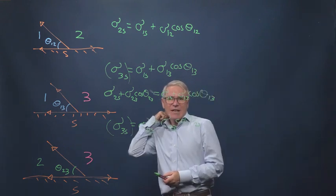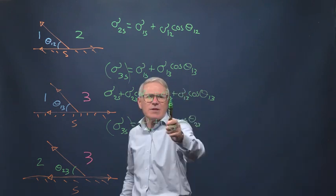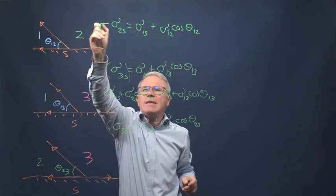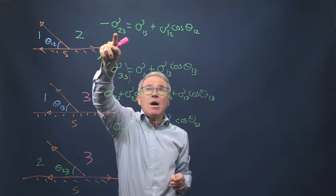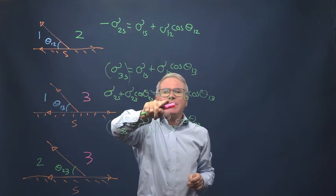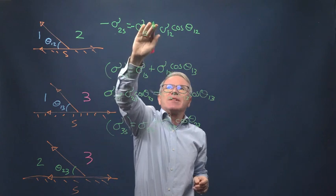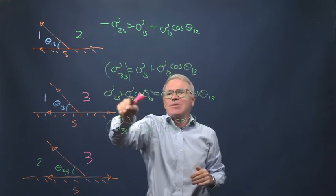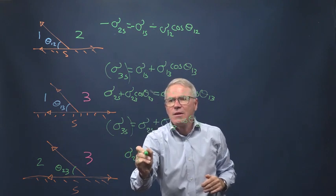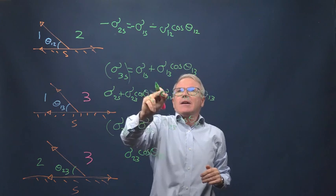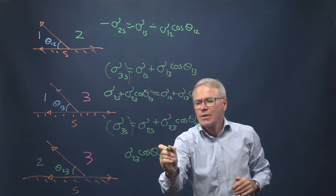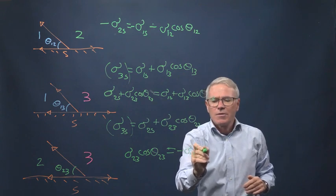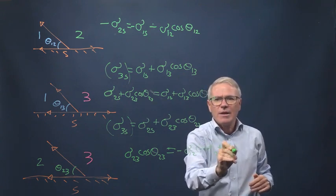Now we've got sigma 2s and sigma 1s. Why don't I take away this from this equation? So sigma 2s minus sigma 2s, and this is sigma 1s minus. I can write all minus signs then add them. This cancels out. I've got sigma 2,3 cos theta 2,3. The 1s disappears. So minus sigma 1,2 cos theta 1,2 plus sigma 1,3 cos theta 1,3.